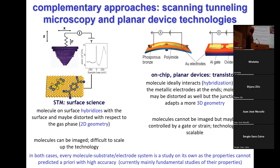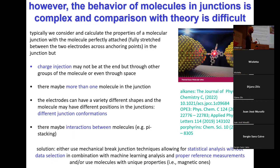If we go to our system, we have two electrodes and a molecule, and this is typically how people look at it: a molecule fully stretched in the junction, behaving in an ideal way. Then people can do calculations and compare with data. But in reality, life is not so simple. The charge injection may not be at the end — it may be somewhere in the middle of the molecule. There could also be more than one molecule in the junction, different junction conformations, and interactions between molecules like pi-stacking.